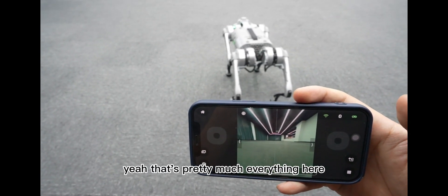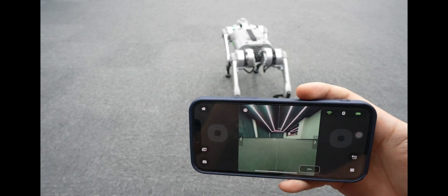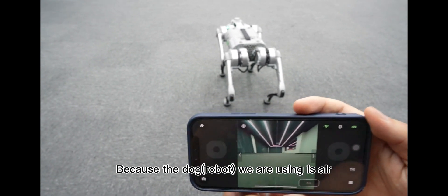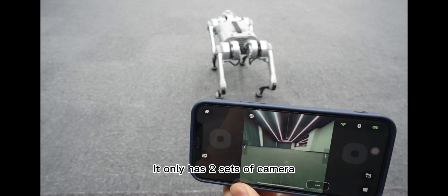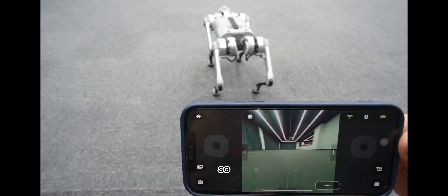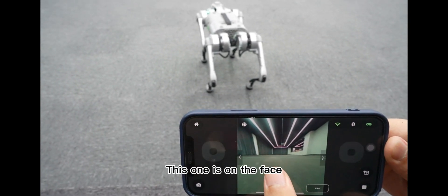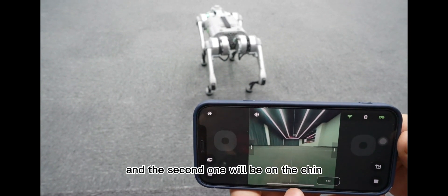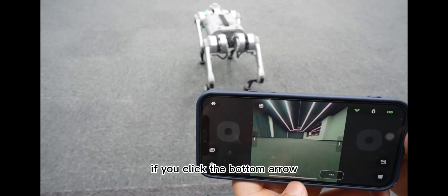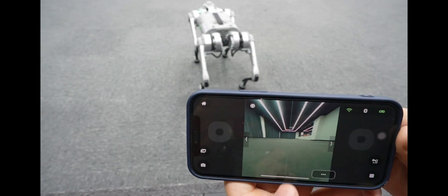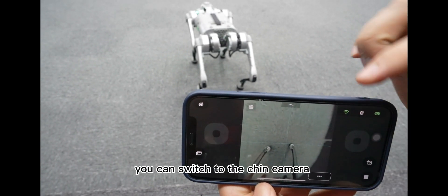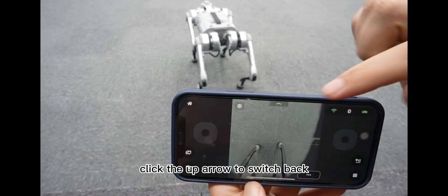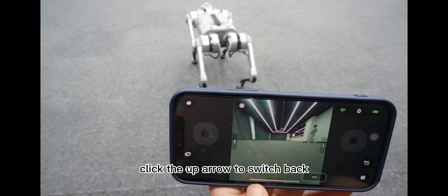That's pretty much everything here. Because the dog we are using is Air one, it only has two set of camera. This one is on the face and the second one will be on the chin. If you click the bottom arrow, you can switch to the chin camera, click the up arrow to switch back.